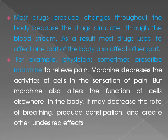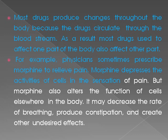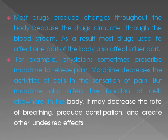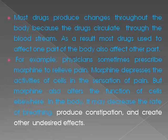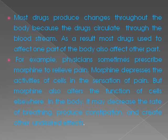physicians sometimes prescribe morphine to relieve pain. Morphine depresses the activities of cells in the sensation of pain. But morphine also alters the function of cells elsewhere in the body. It may decrease the rate of breathing, produce constipation, and create other undesired effects.